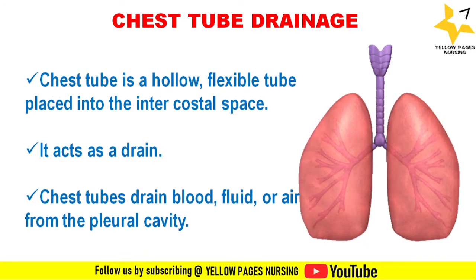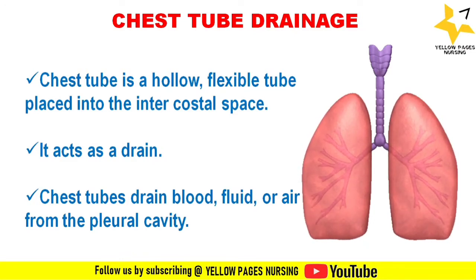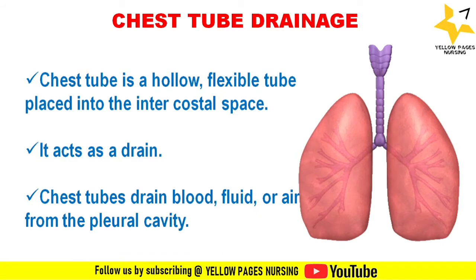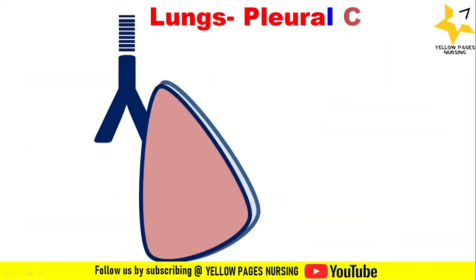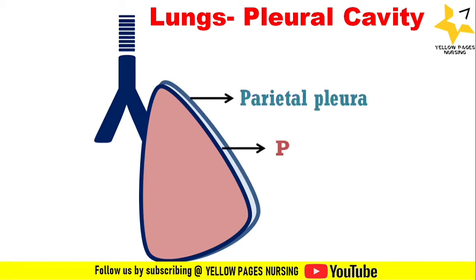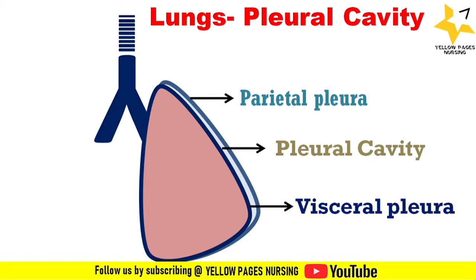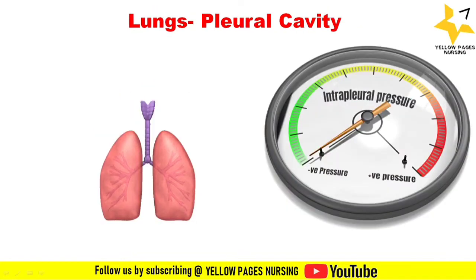Before knowing the functions and principles, we should have an idea about the layers of the pleural cavity. Lungs are surrounded by pleura which have a layer of fluid between them. The visceral pleura is attached to the lungs and the parietal pleura is attached to the ribs. In order to recoil with the pleura, the lungs are elastic in nature.